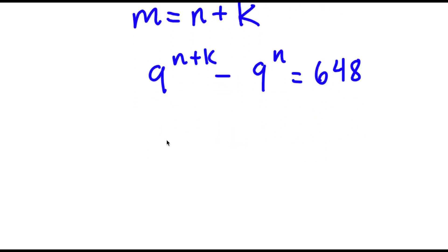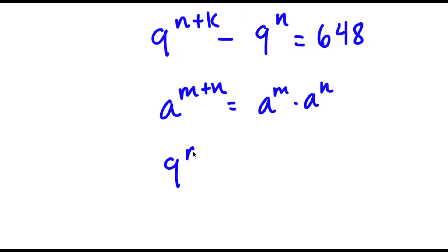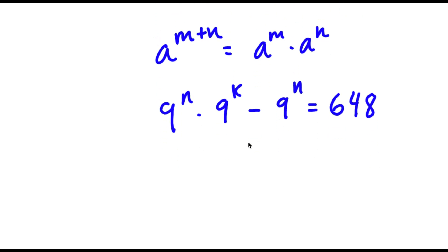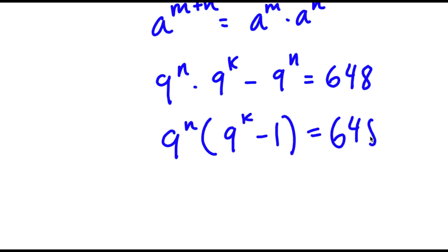Now, if I have something in the form a to the power of m plus n, this is equal to a to the power of m times a to the power of n. So 9 to the power of n plus k equals 9 to the power of n times 9 to the power of k. Now I have this minus 9 to the power of n is equal to 648. Factoring out 9 to the power of n, I get 9 to the power of n times 9 to the power of k minus 1 is equal to 648.